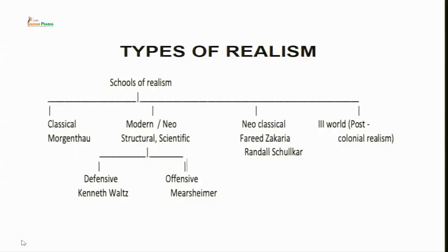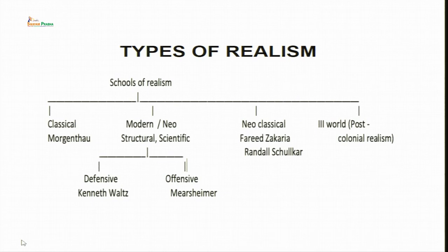Coming to the types of realism — realism is classified into four types: classical realism, modern or structural or scientific realism (neorealism), neoclassical realism, and post-colonial realism. We will focus on all four one by one.